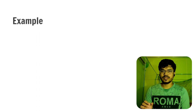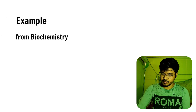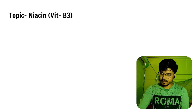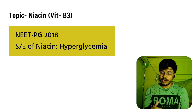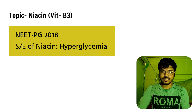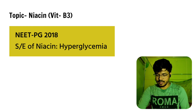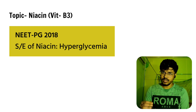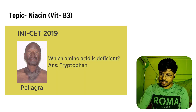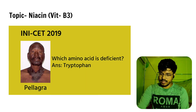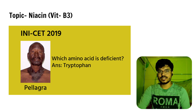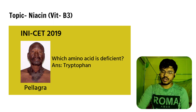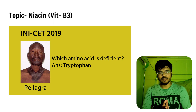For example, let's talk about a topic from Biochemistry. The topic is Niacin. In NEET-PG 2018, they asked about the side effects of Niacin. The side effect is hyperglycemia, because Niacin causes insulin resistance. In NEET-PG 2019, they gave the Casal's necklace image and asked which amino acid is deficient. The answer is tryptophan, because Niacin is synthesized from tryptophan.